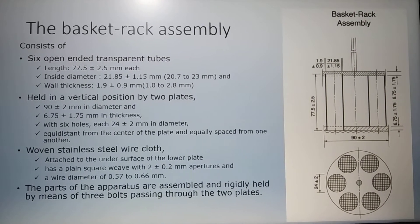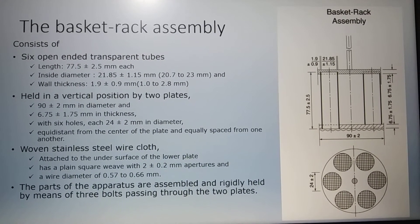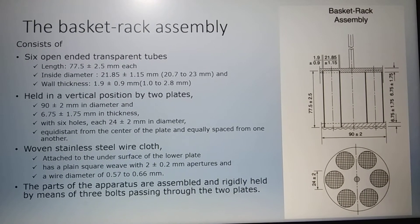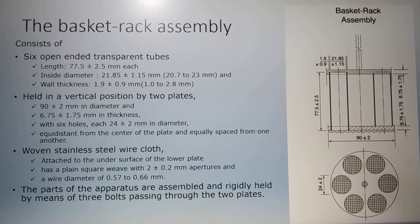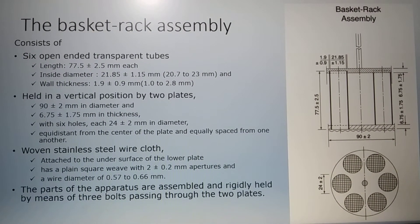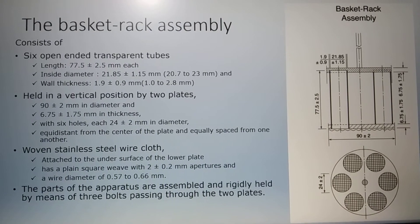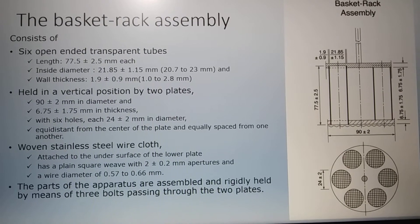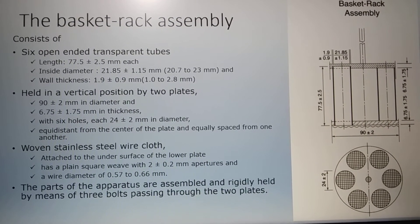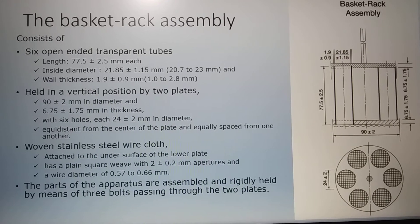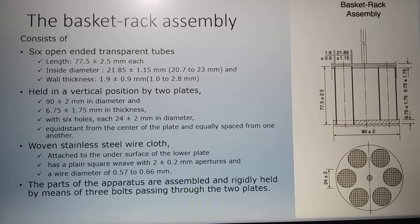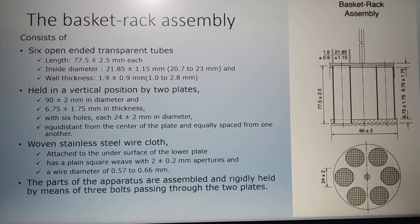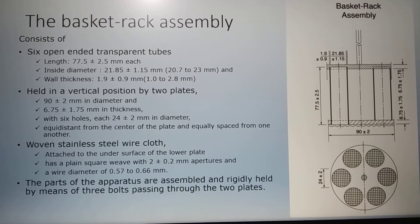The tubes have a wall thickness of 1.9 plus or minus 0.9 mm. The six tubes are held in a vertical position by two plates, one on the top and one on the bottom. The diameter of the plate is 90 plus or minus 2 mm, and the thickness should be 6.75 plus or minus 1.75 mm.